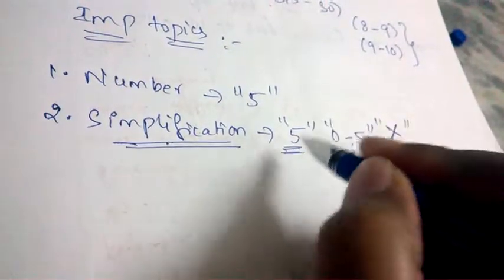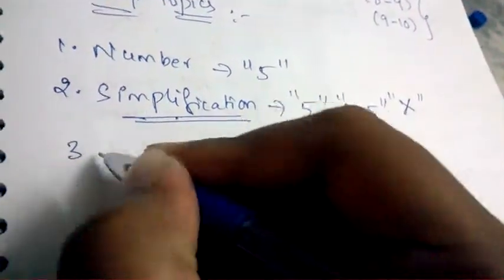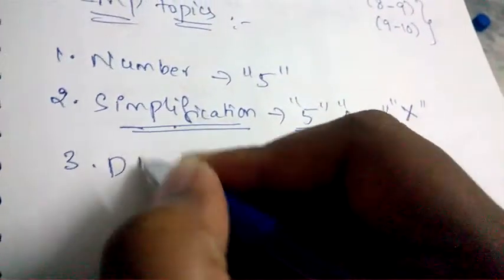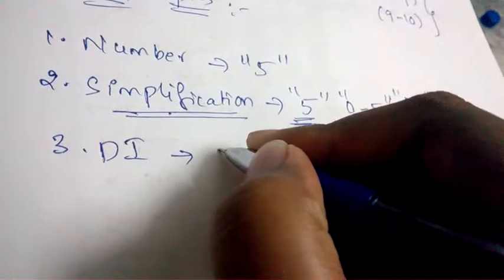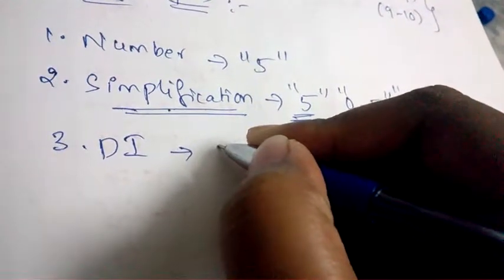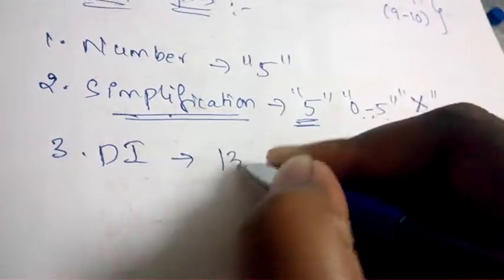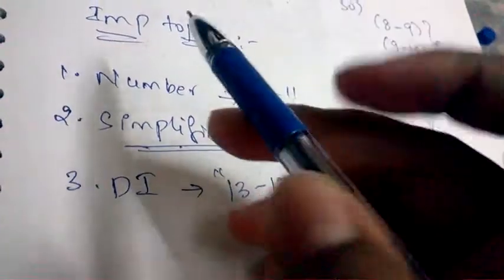Next important topic is Data Interpretation. From Data Interpretation, it is having most important and very huge weightage. 13 to 15 questions will be appearing from Data Interpretation. This is very most important topic in Quantitative Aptitude.